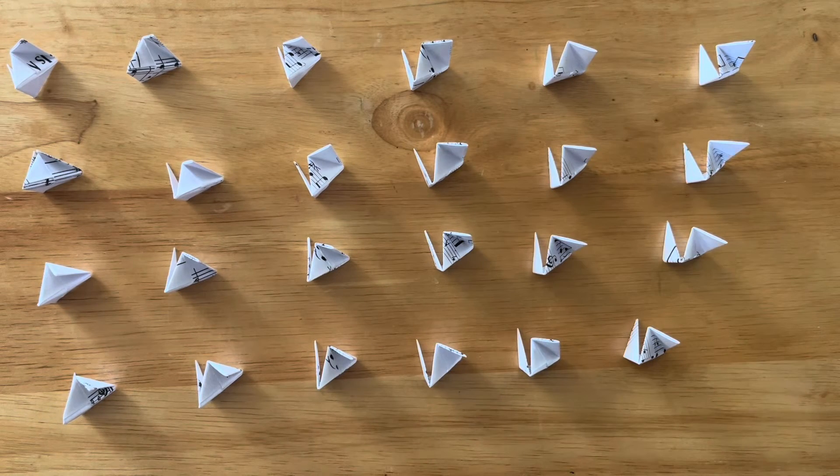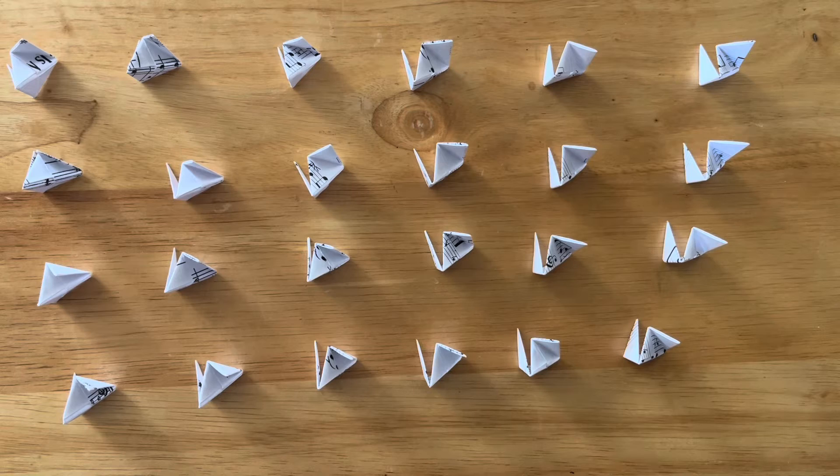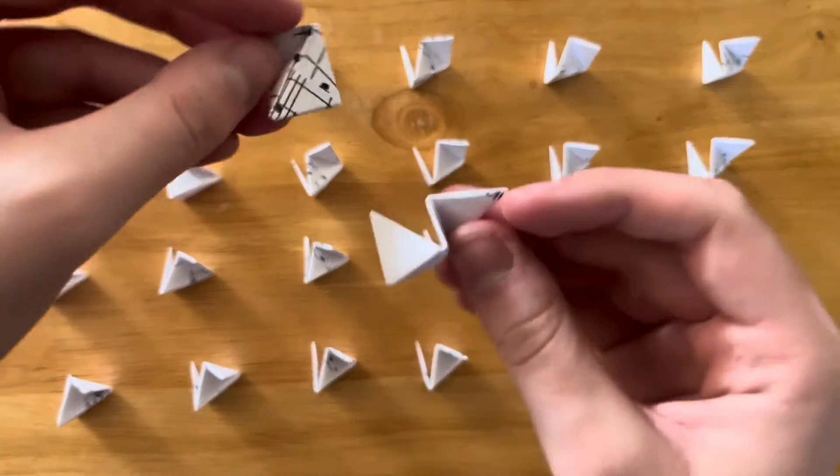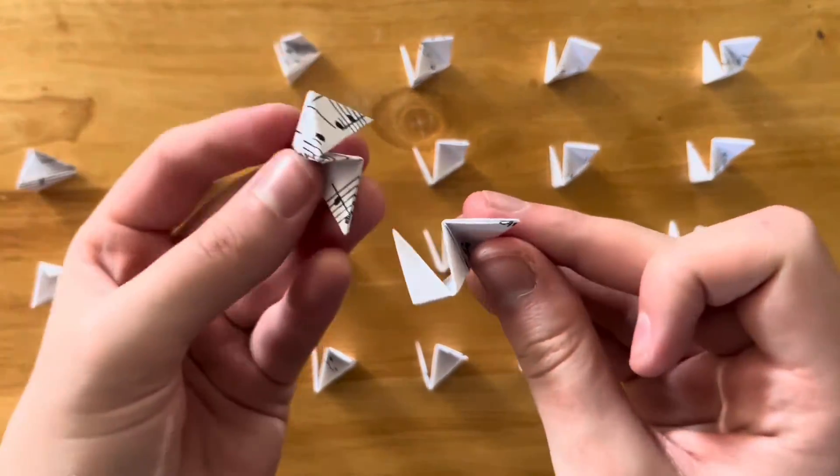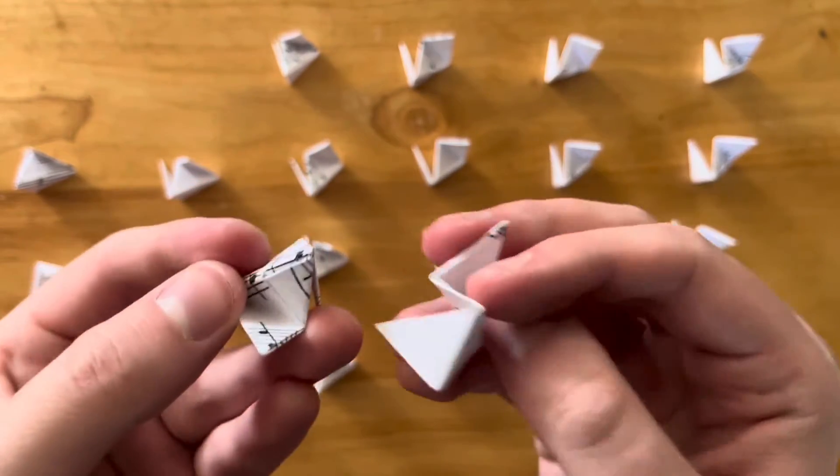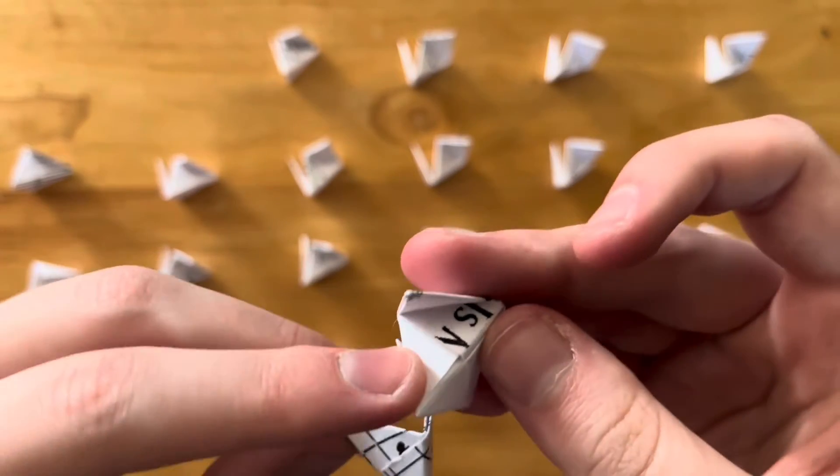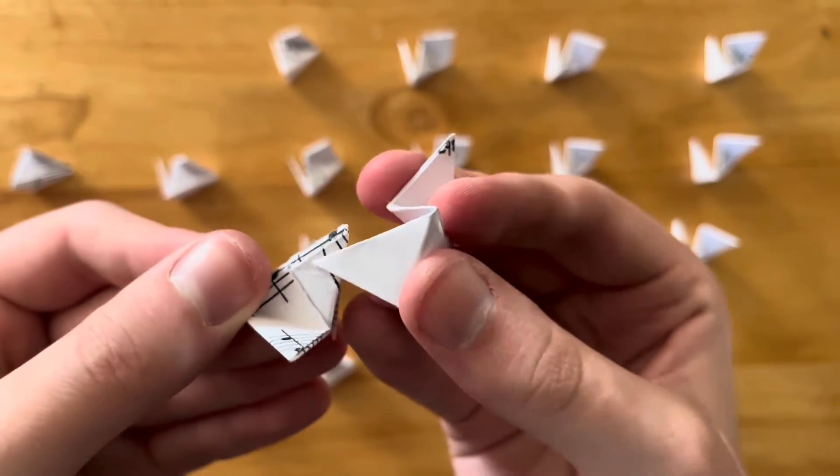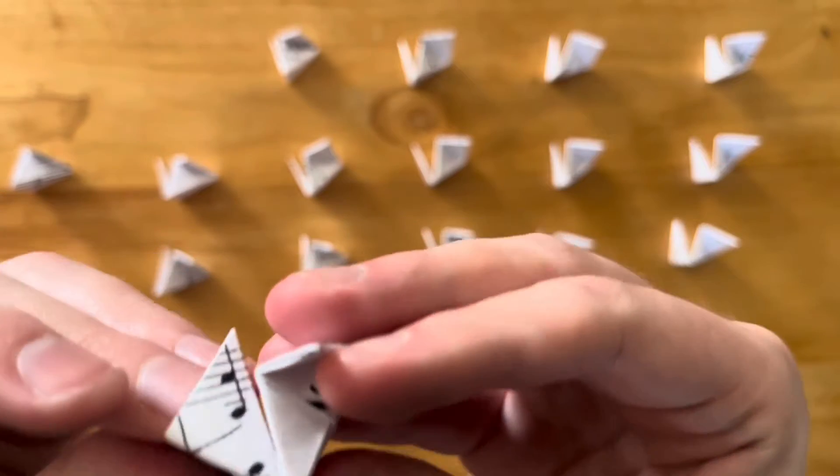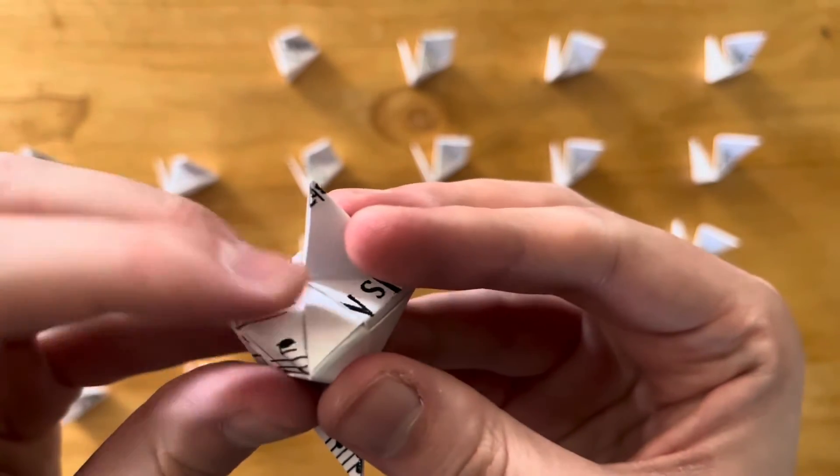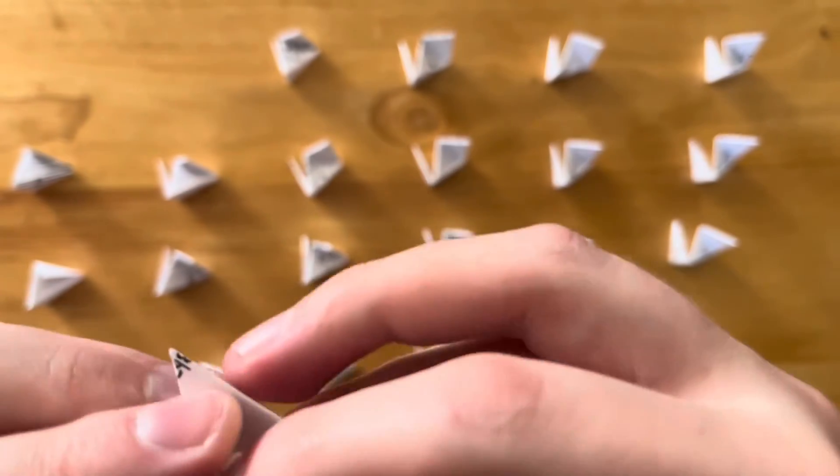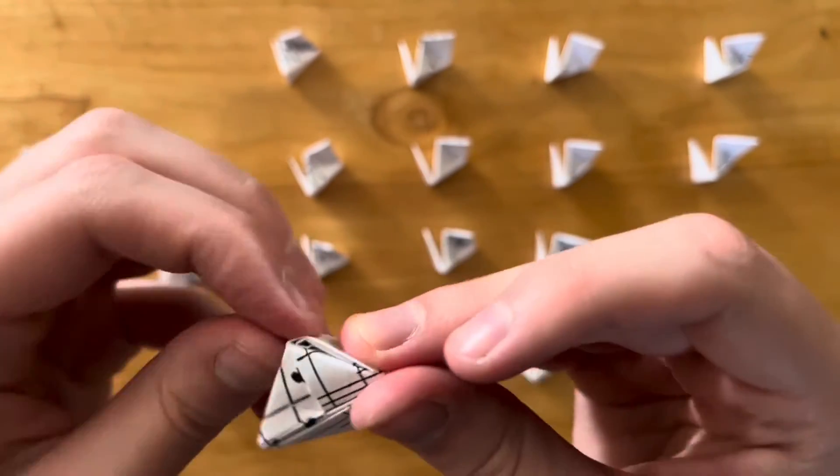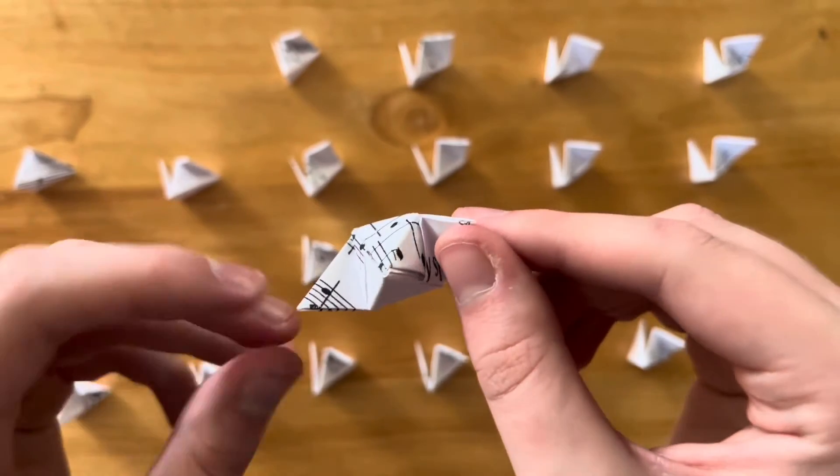Now that you have folded them to the proper shapes, what we have to do is combine them into pairs to create the points that we will put together. You're going to take two of the units like this and rotate one of them about 180 degrees. You can see that there is a little pocket here. So what you're going to do is take this tip and put it into this pocket. Then you're going to do the same thing with this tip into this pocket here. I'll do this a couple more times so you'll be able to see it. There you go. So that's your first little point.